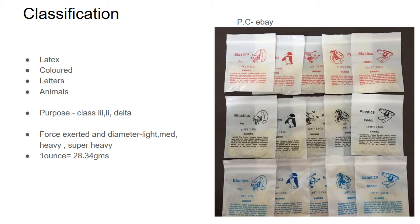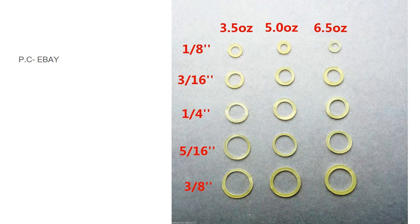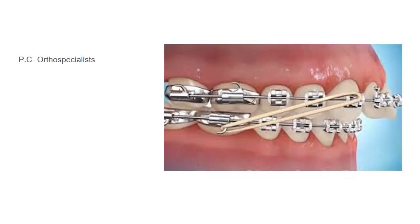Elastics are graded in the metric system of ounces, where 1 ounce equals 28.34 grams. This diagram is very important: the same diameter elastic — for example, 1/8 inch — can produce 3.5 ounces of force, while a thicker version produces 5 ounces, and an even thicker one produces 6.5 ounces. This variation in force production varies from company to company, so every company has its own chart and gradation of elastics.